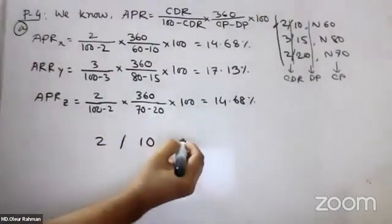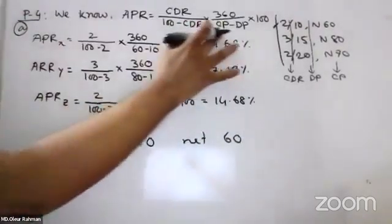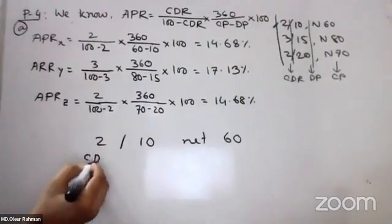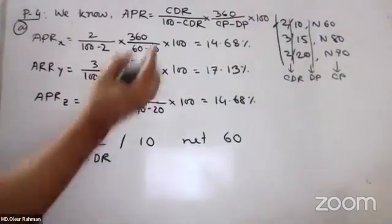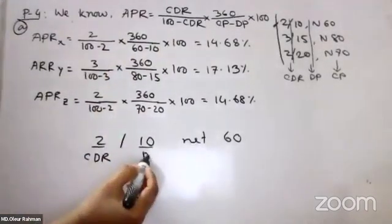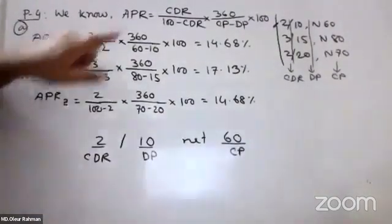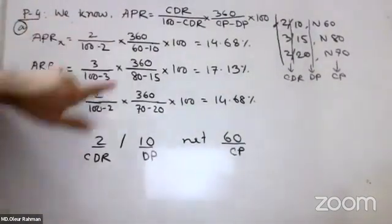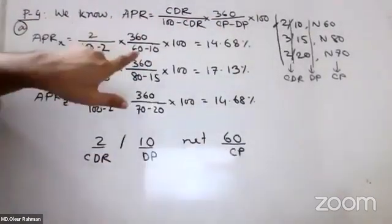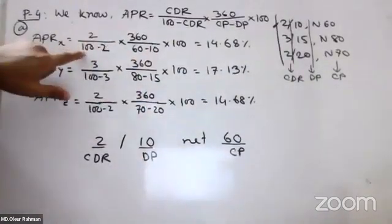The same is DP and CP. The same is CDR, CP — CIT — and DP is CIT. The same is a scientific calculator.